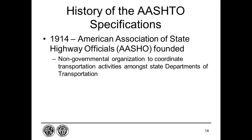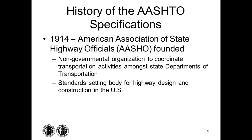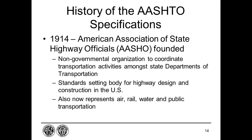On December 12, 1914, the American Association of State Highway Officials, or AASHO, was founded as a non-governmental organization whose purpose was to coordinate transportation activities amongst the various state departments of transportation. The association has since evolved into a standard-setting body that publishes specifications, test protocols, and guidelines used in highway design and construction in the U.S. The association now also represents not only highway, but also air, rail, water, and public transportation as well.